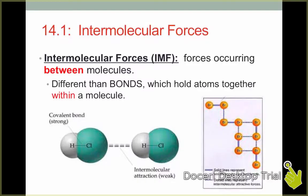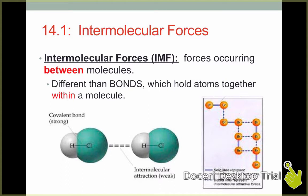Notice here that we have a whole bunch of Br2 molecules, and the solid line indicates the bonds between the bromine atoms that hold together the Br2 molecules. On the other hand, we can find intermolecular forces represented as dotted lines. These dotted lines represent the forces between one Br2 molecule and another Br2, the forces acting between one molecule and its neighboring molecules.